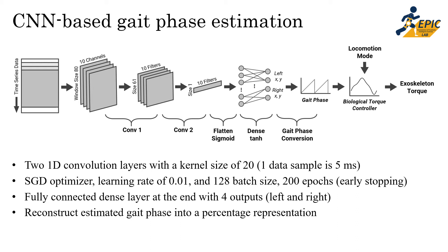After a full sweep of hyperparameter optimization, we converged to a CNN architecture with two 1D convolutional layers with a kernel size of 20. The input size was 80 samples, with a batch normalization layer in the initial stage normalizing input data to zero mean and unit variance. After the CNN layers, a fully connected dense layer mapped the output to four outputs — left and right x and y Cartesian coordinates. After reconstructing the estimated gait phase into 0-100% representation, this is fed into the biological torque controller along with the manual keyboard input of the current ambulation mode to generate the relevant exoskeleton torque.